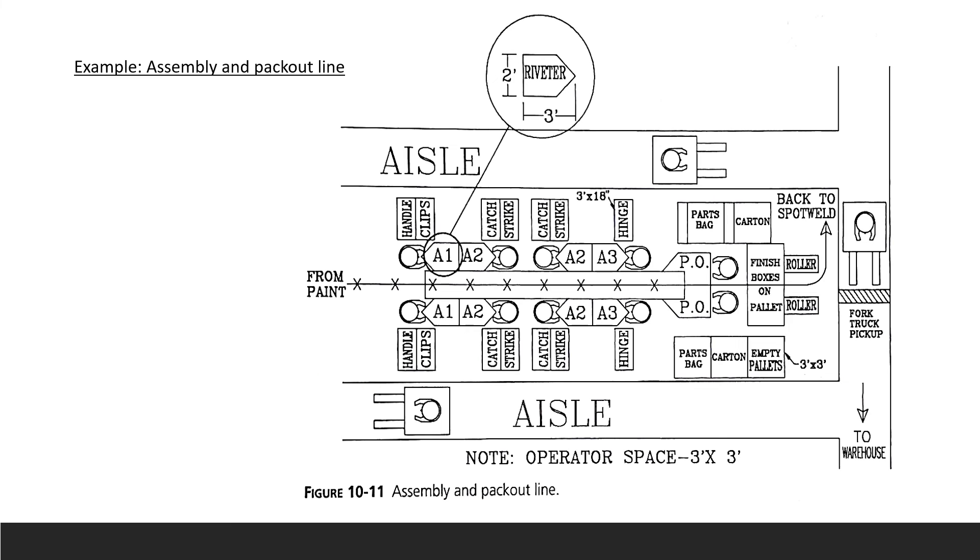The next one is your assembly and pack out line. Pack out is your shipping line, your packing - everything that you produce in your assembly line, put it in a box or container and pack it. We call that pack out line.